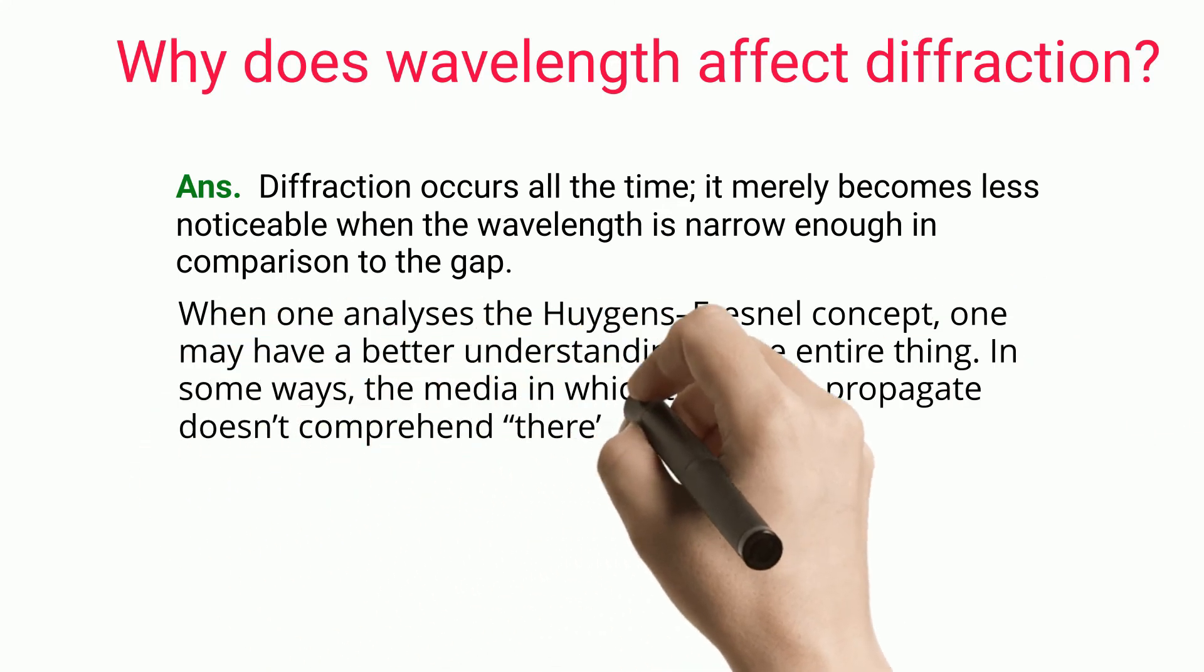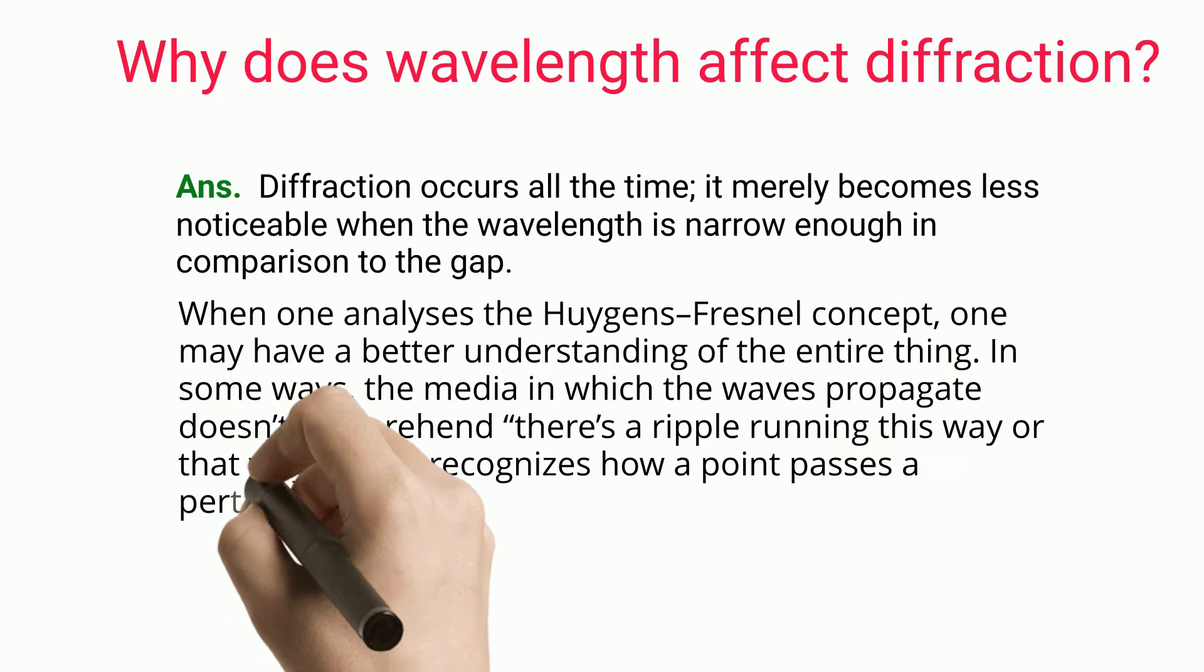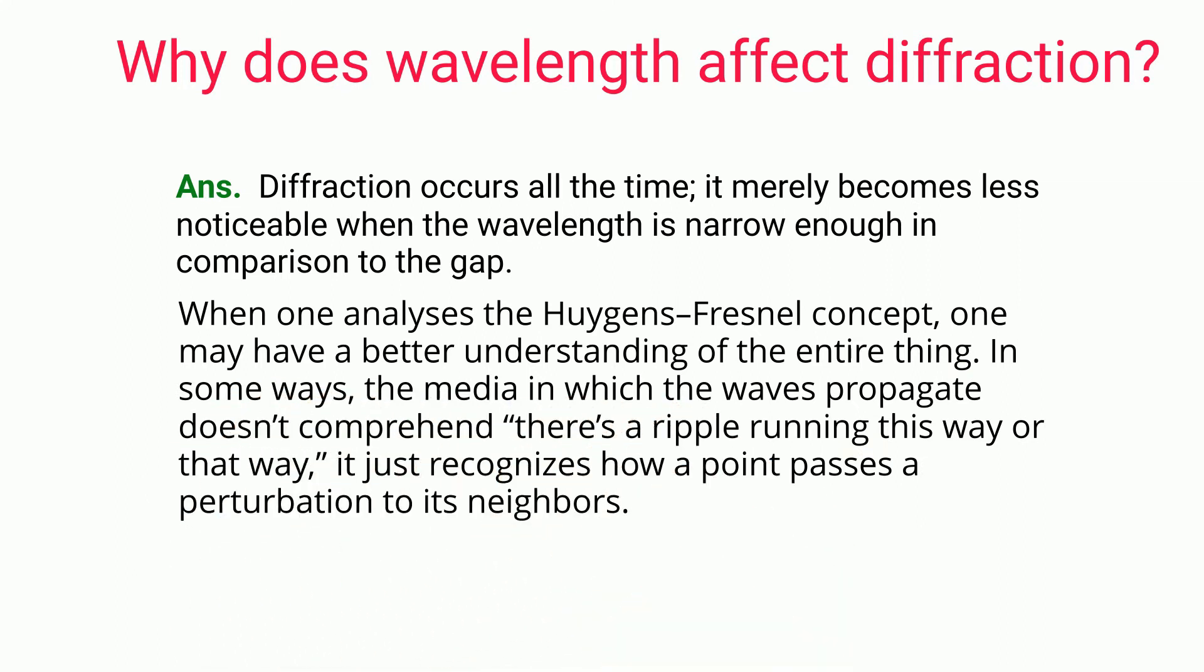In some ways, the media in which the waves propagate doesn't comprehend there's a ripple running this way or that way. It just recognizes how a point passes a perturbation to its neighbors.